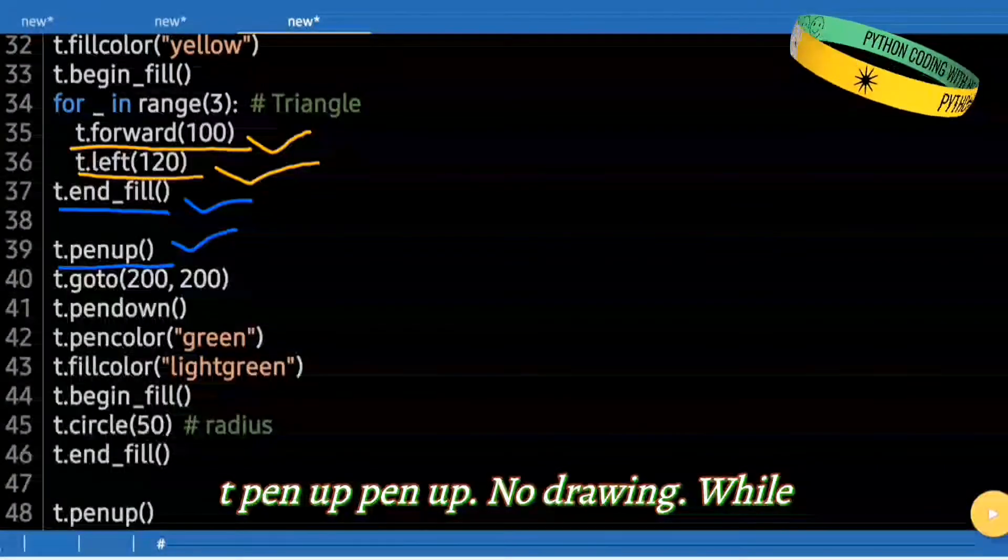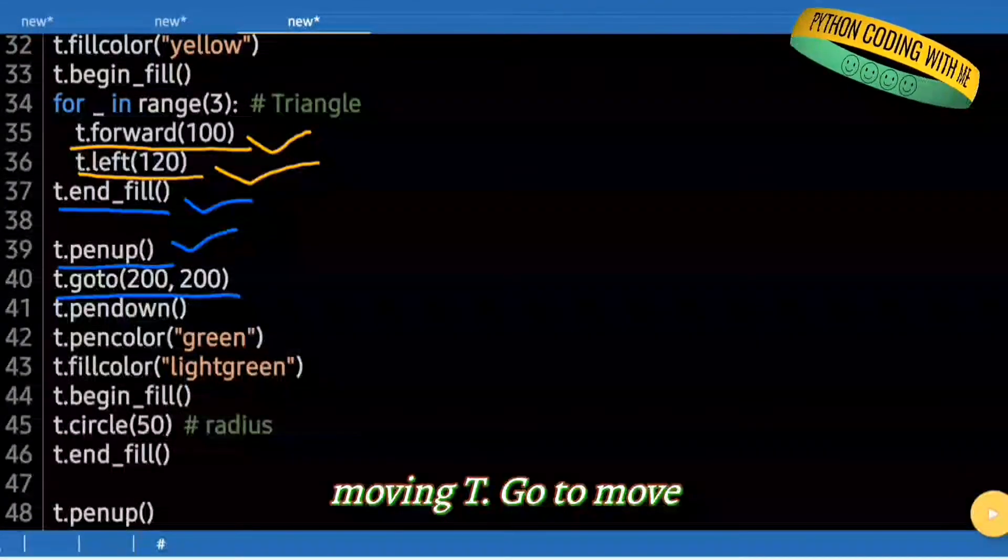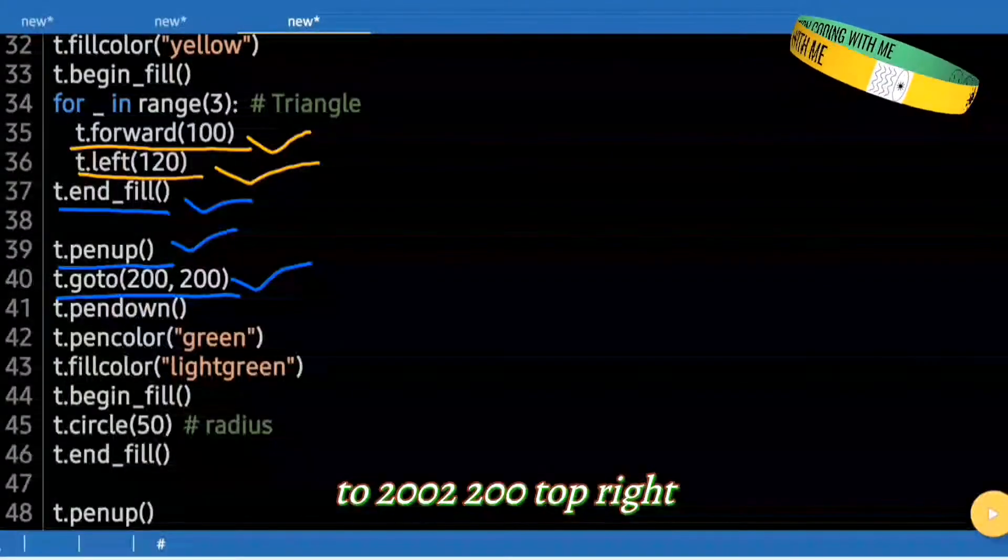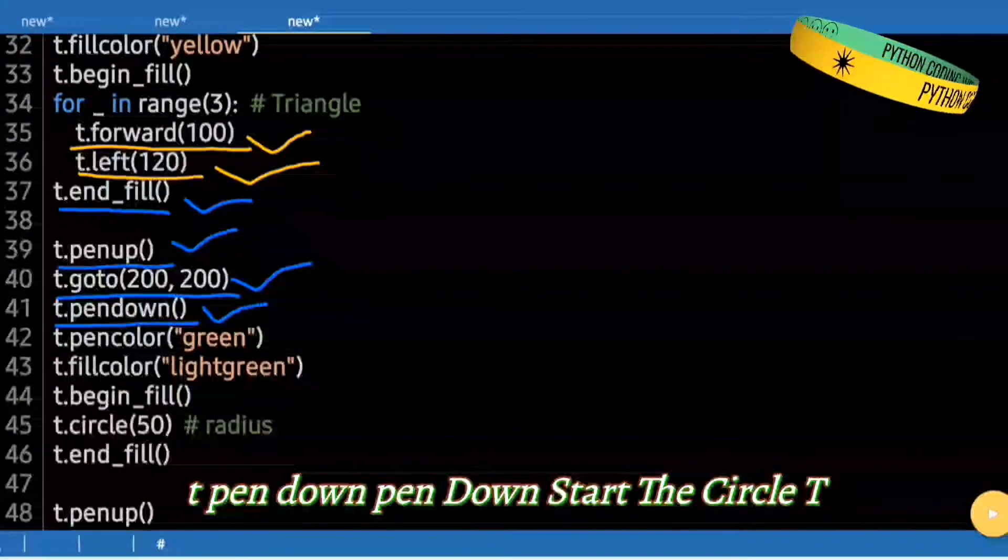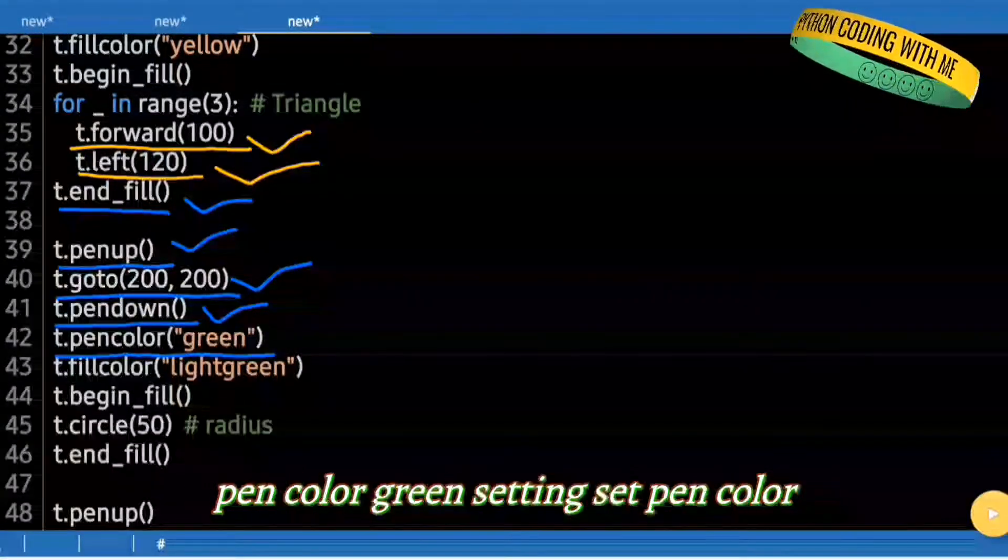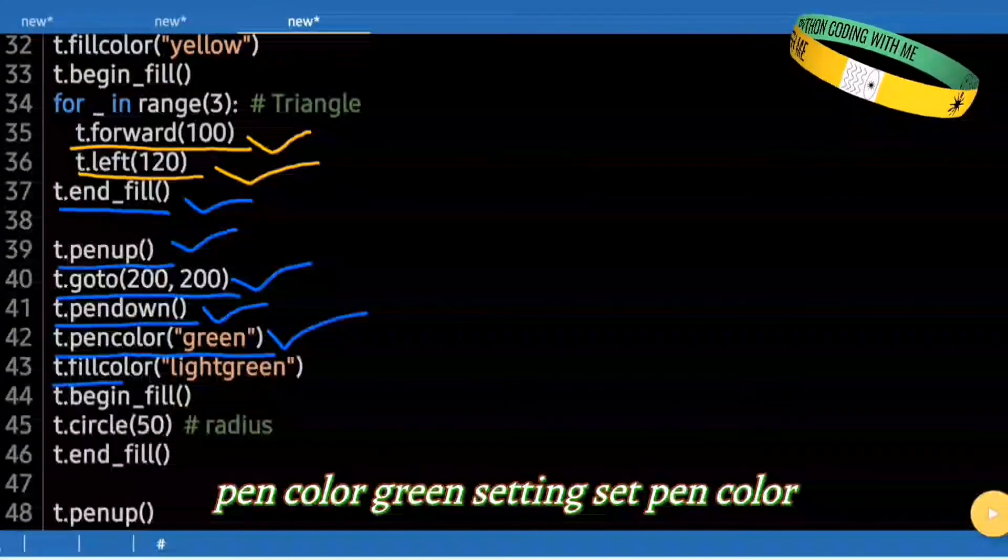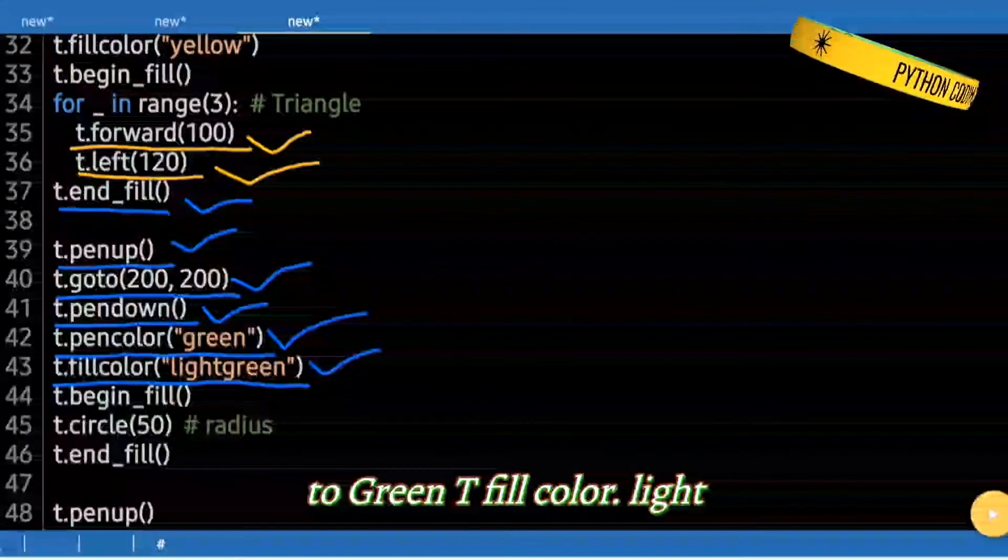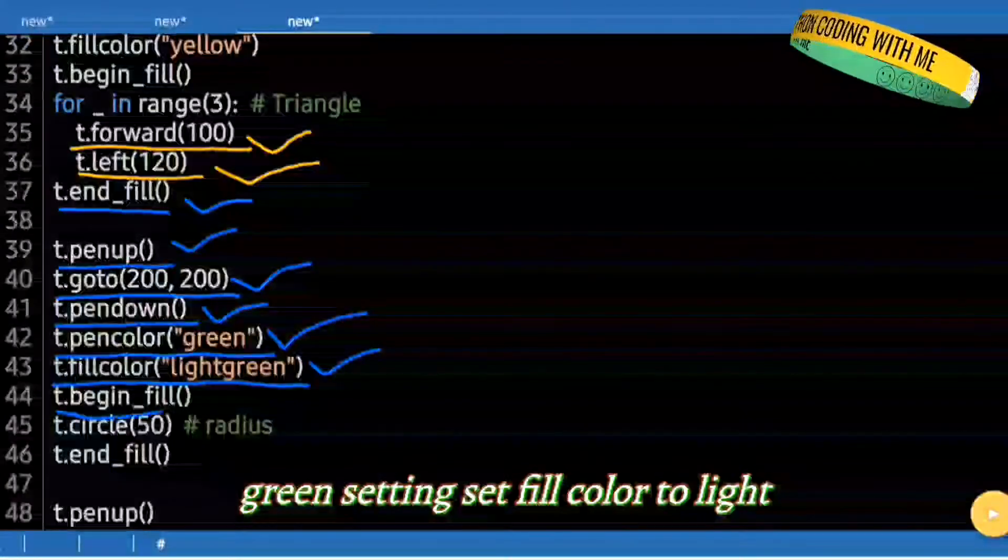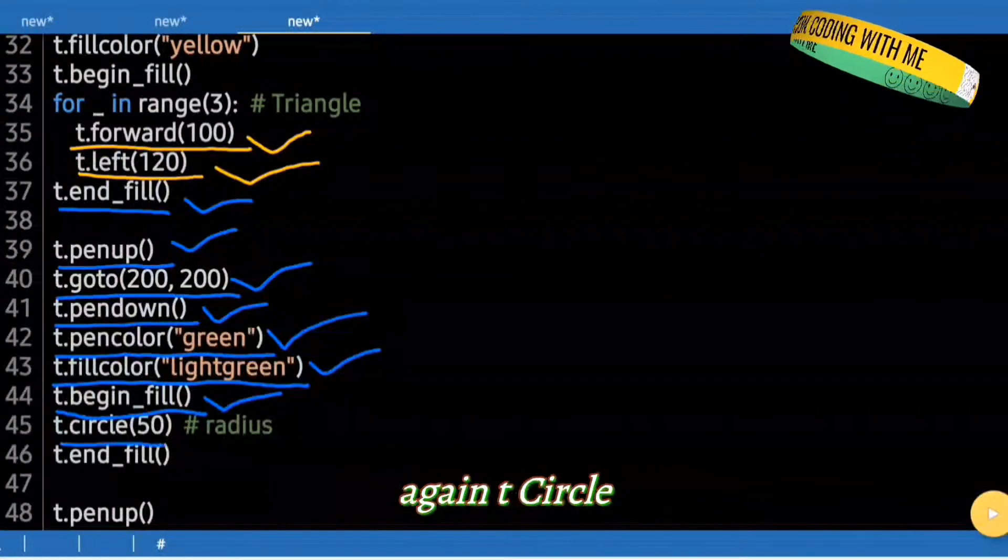t.penup(). No drawing while moving. t.goto(200, 200). Top right. t.pendown(). Start the circle. t.pencolor("green"). Set pen color to green. t.fillcolor("lightgreen"). Set fill color to light green. t.begin_fill(). Begin filling again.